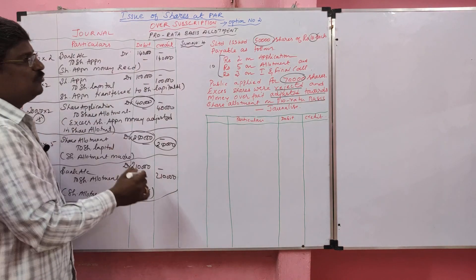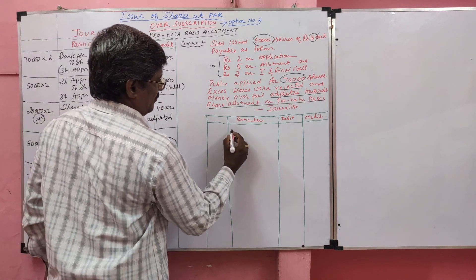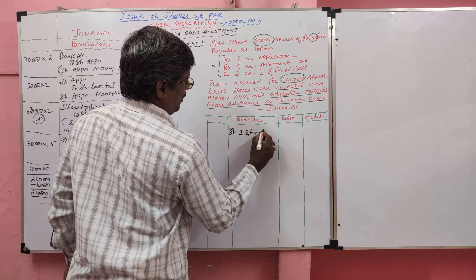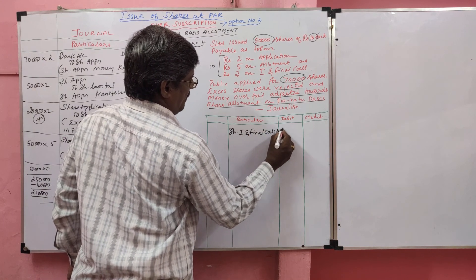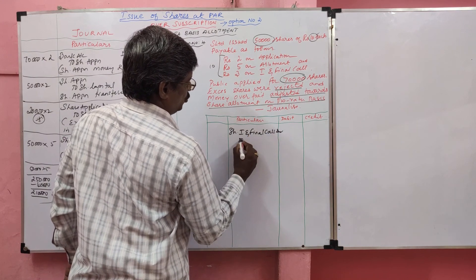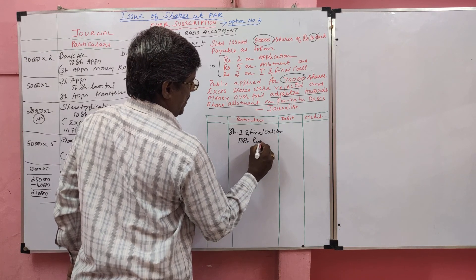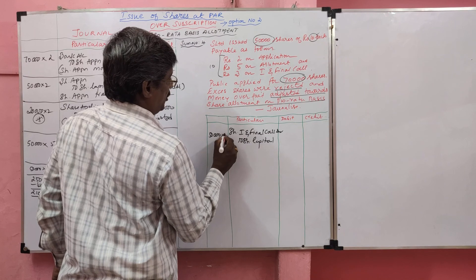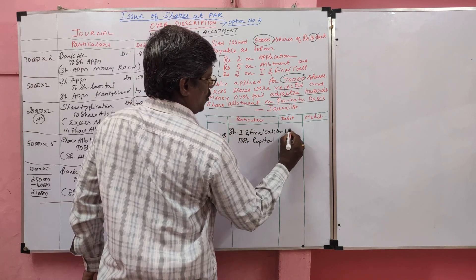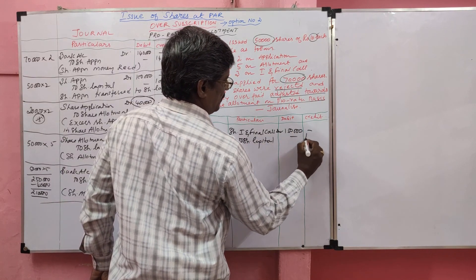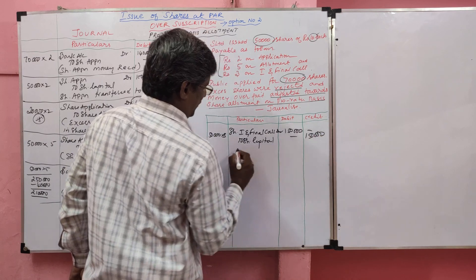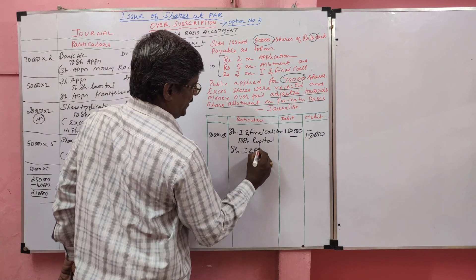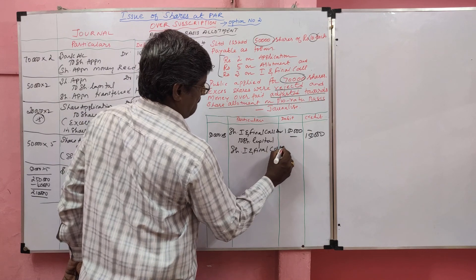Then move to the share first and final call. Share First and Final Call Account Dr to Share Capital. How much? 50,000 × 3 = Rs. 1,50,000. Narration: Share first and final call made.